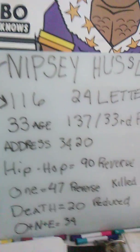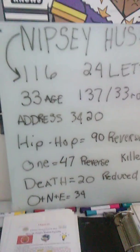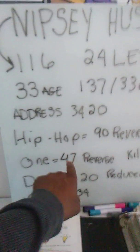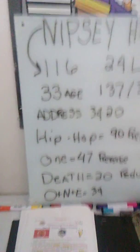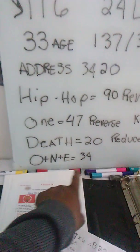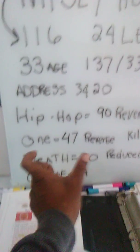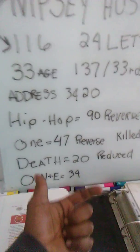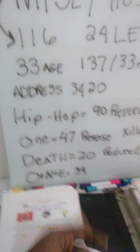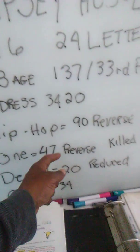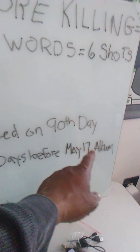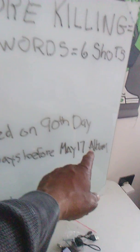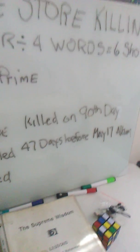When we look at 'one' in simple ordinal, it adds up to 34. But when we reverse the numbers on the alphabet and add it up, 'one' adds up to 47. He was killed 47 days before the release of him and DJ Khaled's album, which would be May 17th.